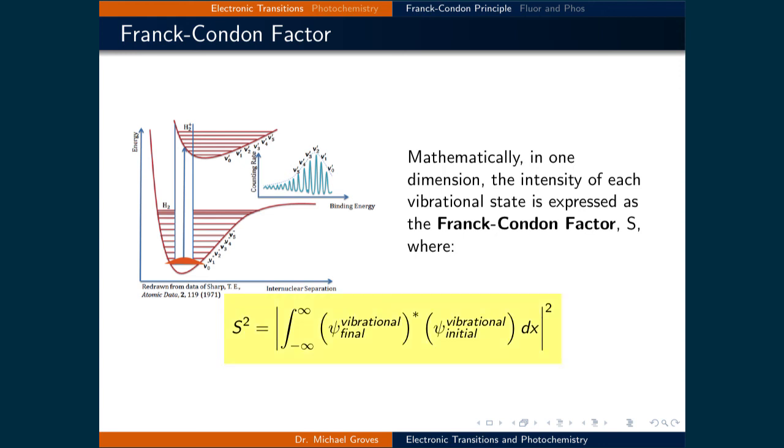They are essentially the square of an overlap integral, denoted as S squared, of the wave function describing the initial vibrational state with the final vibrational state. Mathematically, this is expressed as S squared is equal to the magnitude squared of the integral from minus infinity to positive infinity of the complex conjugate of the wave function that describes the final vibrational state times the wave function that describes the initial vibrational state.